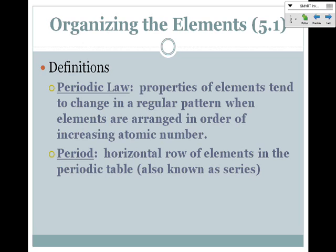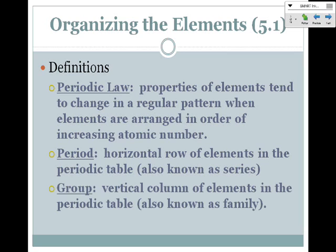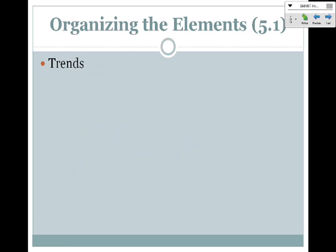Period is the horizontal row of elements in the periodic table. Horizontal means like the horizon, so it means left to right. The rows of elements from left to right are known as periods. A group is the vertical column of elements in the periodic table, the columns that go up and down. A period can also be known as a series, and groups are also called families.